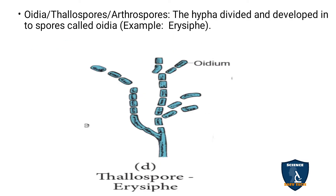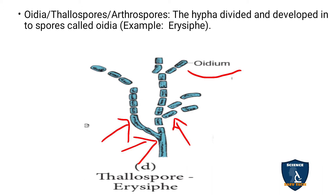Oidia, or thallospores, or arthrospores — here the hypha is divided into spores and developed. This is called oidia. It is a thallus structure where the thallus divides into spores, so it is called thallospores. Since these spores look like jointed legs (similar to arthropod legs), they are named arthrospores. Example: Erysiphe.